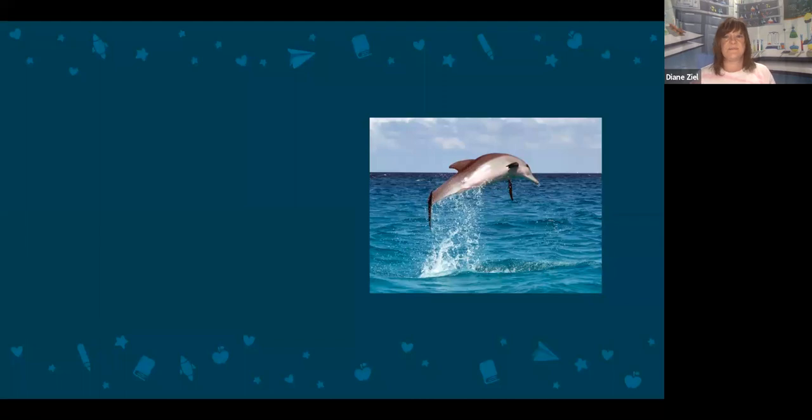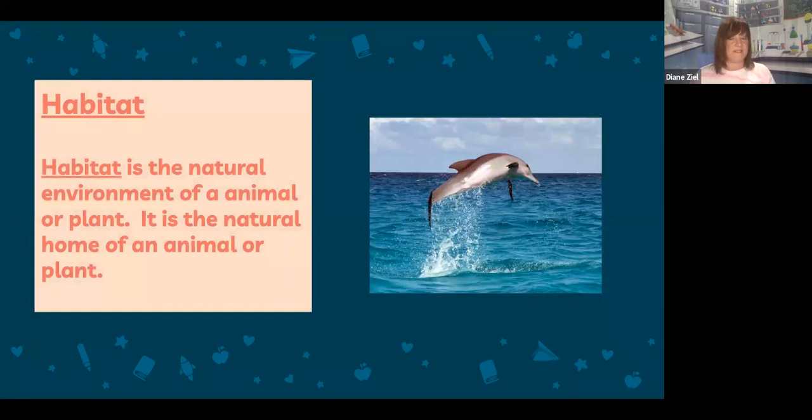Here you see a picture of a dolphin jumping out of his home in the ocean. Which vocabulary word would this be an example of? If you guessed habitat, you are correct. Habitat is the natural environment of an animal or plant. It is the natural home of an animal or plant.